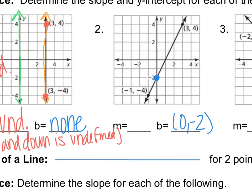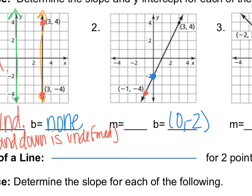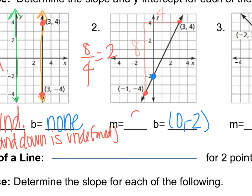For problem 2, the points are given. Going from one point to the other, I rise 8 and run 4. So the slope is 8 over 4. It helps to draw a line connecting the two points and count carefully. Since 8 divided by 4 equals 2, the slope of this line is 2.